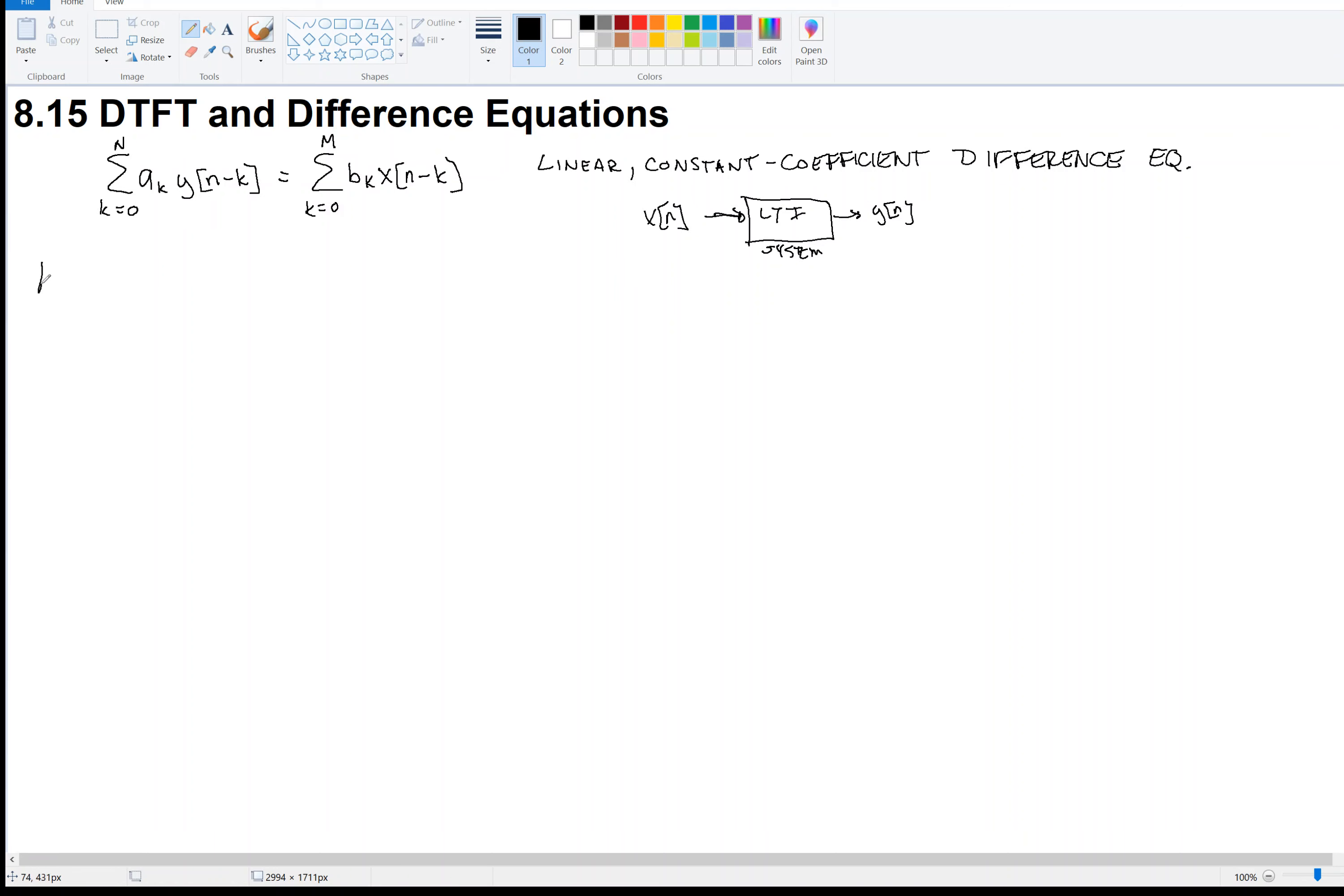So I will take, so I'll use this kind of script F with curly brackets to say that I am taking the Fourier transform of this expression. And so if I do that on both sides, then I've preserved the equality, so I can do that. K equals 0 to m, bk, x, n minus k, like this.